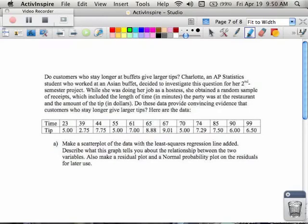We have a data table. This data table is wanting to know, do customers who stay longer at buffets give larger tips? Charlotte, who's an AP student and worked at Asian Buffet, decided to investigate this question for her second semester project. While she's doing her job as a hostess, she obtained a random sample of receipts, which included the length of time in minutes that the party was at the restaurant, and the amount of the tip in dollars. Do these data points provide convincing evidence that the customers who stay longer give larger tips? So here's the data. Once you have this data, yesterday we talked about a bunch of different kinds of graphs that you can produce to see what's going on with the data. We're going to do that next.